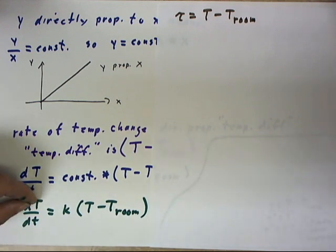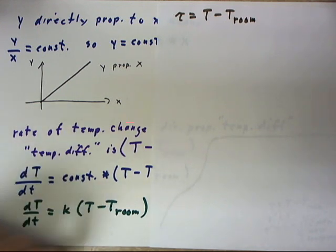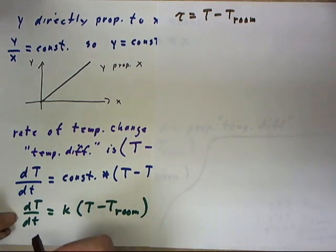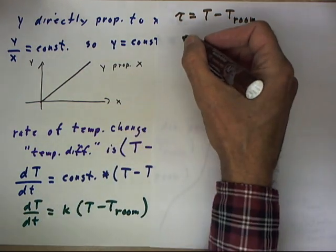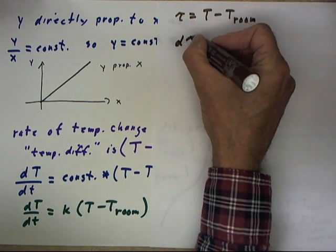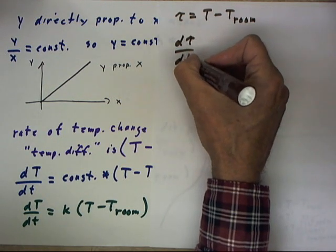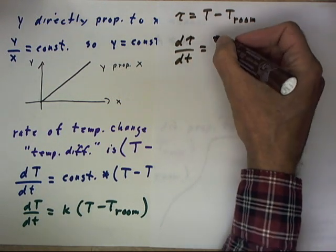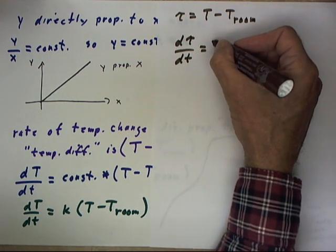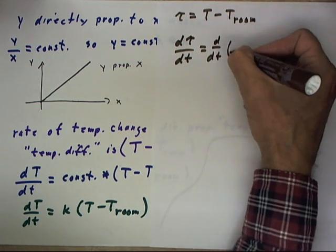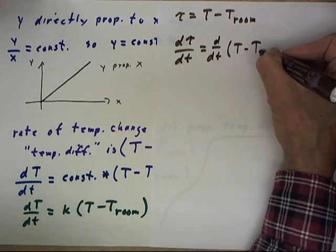Well, I don't really want to have two different variables, big T on this side and tau on this side, so let's just figure out what d tau dt would be. Let's see, d tau dt equals the derivative with respect to t of T minus T room.